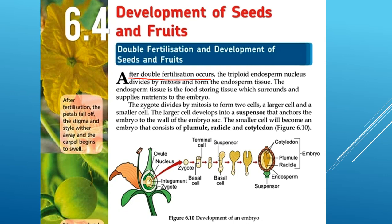After double fertilization occurs, the triploid endosperm nucleus divides by mitosis and forms the endosperm tissue. This endosperm tissue is the food-storing tissue which surrounds and supplies nutrients to the embryo. Meanwhile, the zygote will also divide by mitosis.